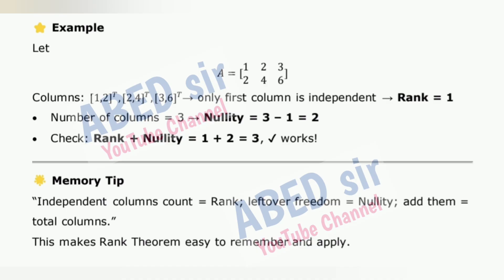Check: rank plus nullity = 1 + 2 = 3. Memory tip: Independent columns count equals rank. Leftover freedom equals nullity. Add them to get total columns. This makes the Rank Theorem easy to remember and apply.